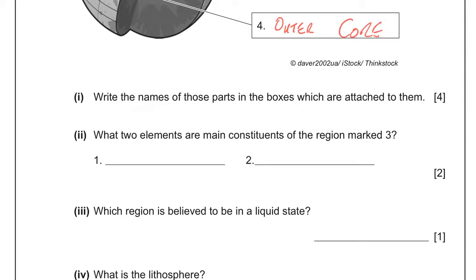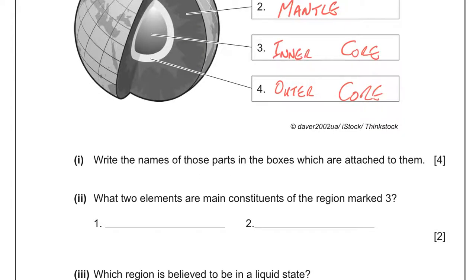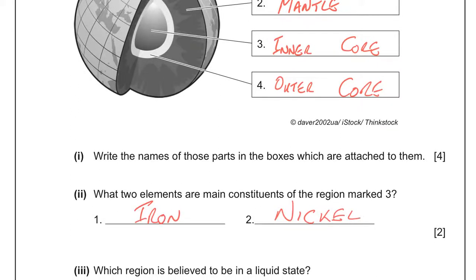What two elements are the main constituents of the region marked 3? In other words, what two elements are you going to find at the inner core of the Earth? And iron and nickel are your answers there.